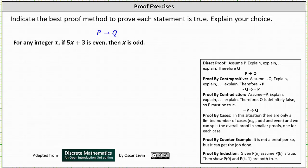In this lesson, we will take a look at three examples of determining what is the best proof method to prove a given statement is true. First, we have: for any integer x, if 5x + 3 is even, then x is odd.